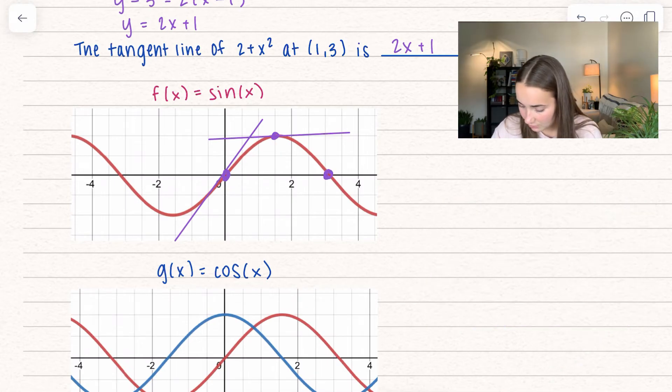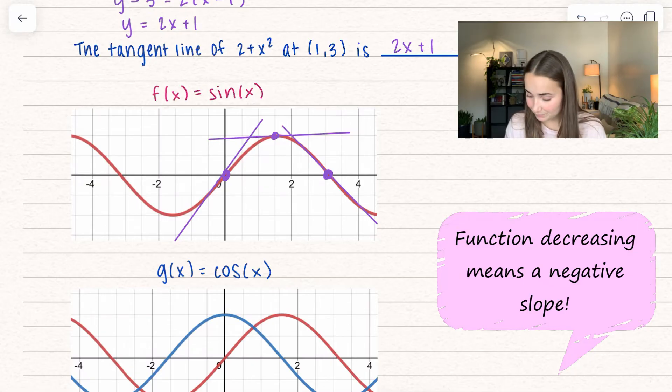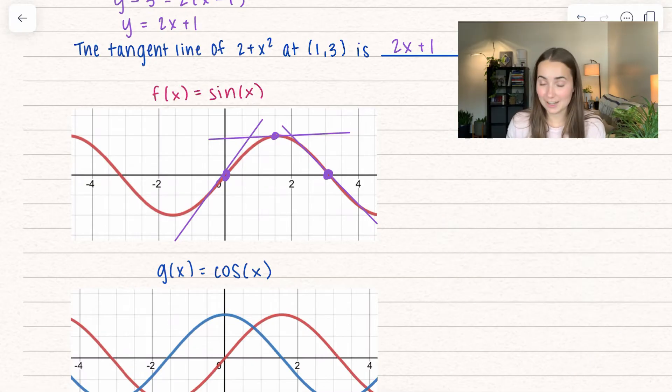Now if I move down the function, I would have a slope that looks kind of like this. It just skims right through. But notice now, I have a negative slope. That slope is negative.